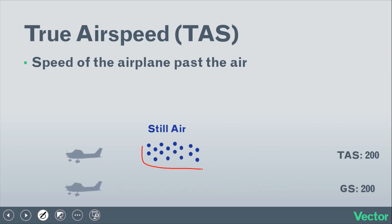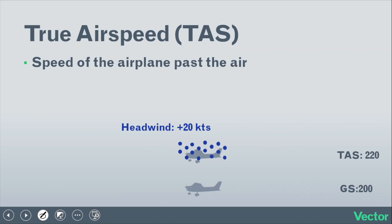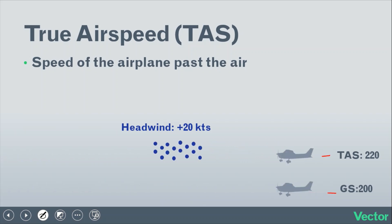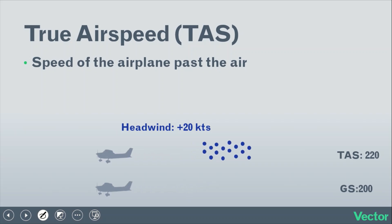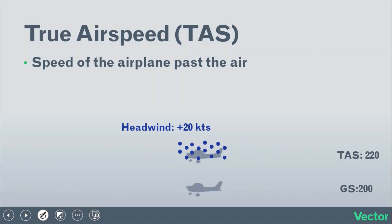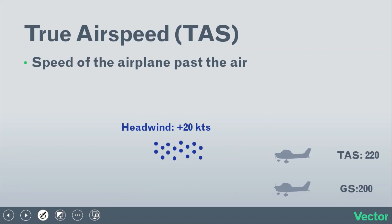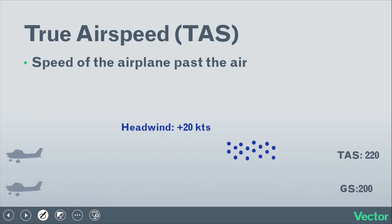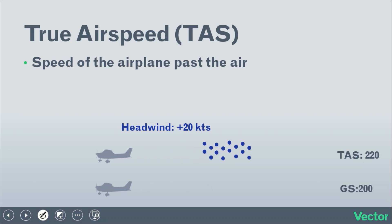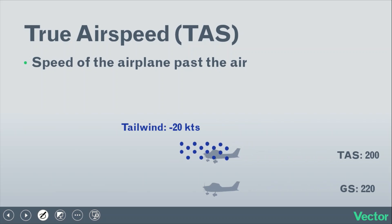True airspeed is the speed of the airplane as it moves through the air, or in relation to the air mass it's flying through. In still air, true airspeed is the same as ground speed, because neither the ground nor the air mass is moving. If we have a headwind, true airspeed is going to be greater than ground speed because the air moves past the airplane faster than the airplane moves over the ground.